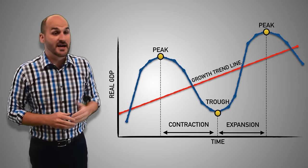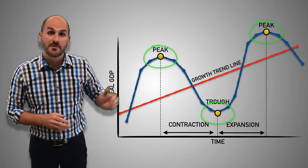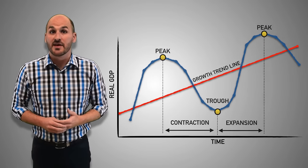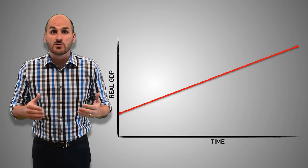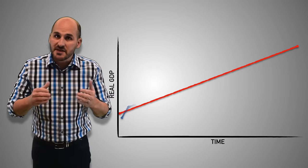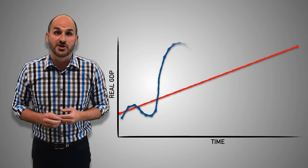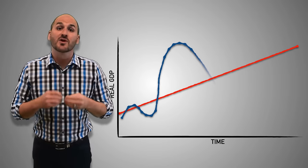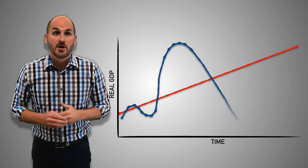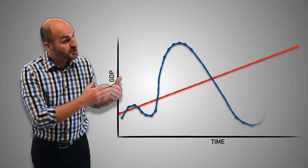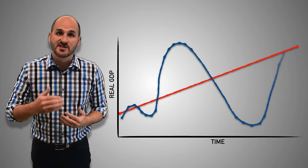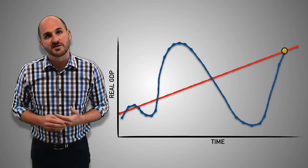One business cycle is defined as a peak, trough, peak. And business cycles will vary in length and severity. Some cycles are short and shallow, while others can be deep and long. The higher the peak, the more excessive the inflation. The deeper the trough, the more excessive the unemployment. The longer it takes real GDP to return to the growth trend line, the longer the excessive inflation or unemployment persists in the economy.